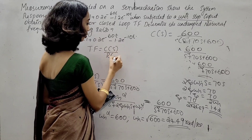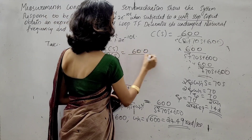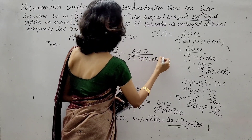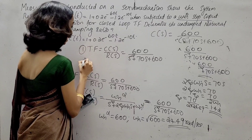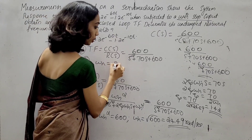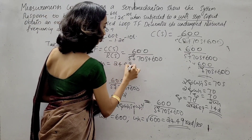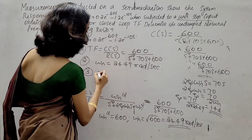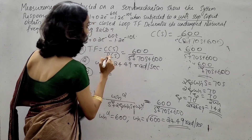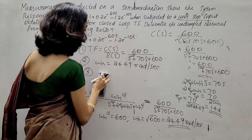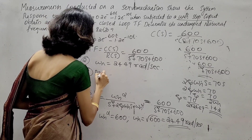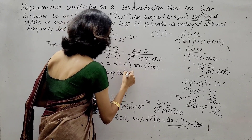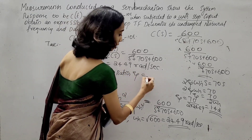Therefore, the closed-loop transfer function is C(s)/R(s) = 600 / (S² + 70S + 600). The undamped natural frequency ω_n = 24.49 rad/s, and the damping ratio ζ = 1.42.